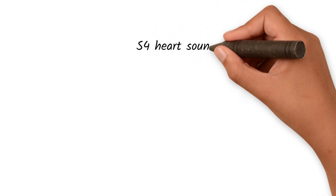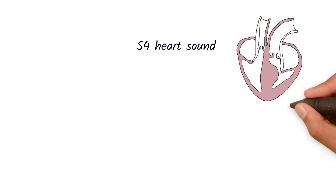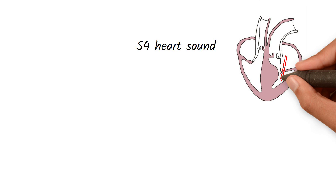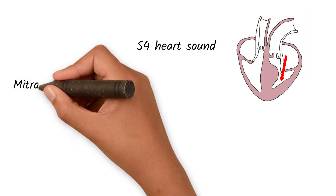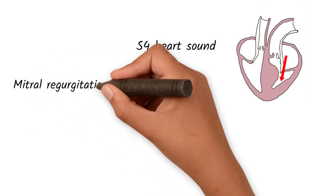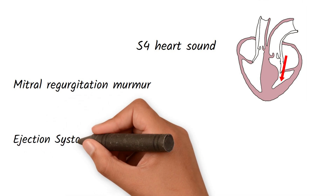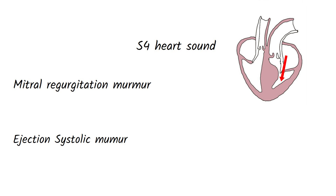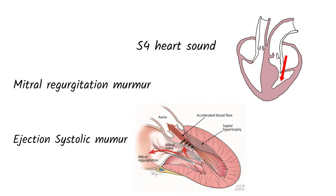In hypertrophic cardiomyopathy, the atria must work extra hard to push blood into the narrow ventricles, producing an atrial kick that generates an S4 heart sound. Due to the Venturi effect and systolic anterior motion of the mitral valve, there will be mitral regurgitation murmurs. Because blood is pushed through the narrow left ventricular outflow tract, you will hear an ejection systolic murmur similar to aortic stenosis, but it does not radiate to the carotids.